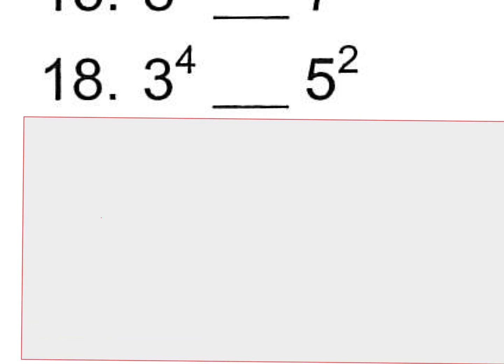So 3 to the 4th power looks like this. And the way that I would group it is putting it by 2 because I know 3 times 3. 3 times 3 is 9. And 3 times 3 is 9. And I can simply do 9 times 9, which is 81.